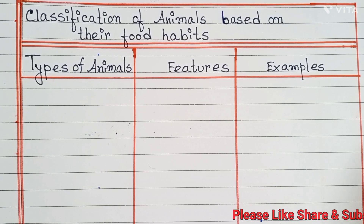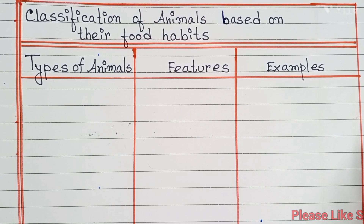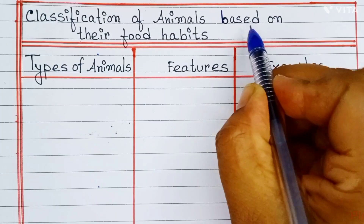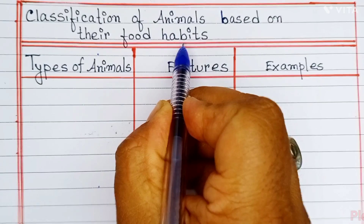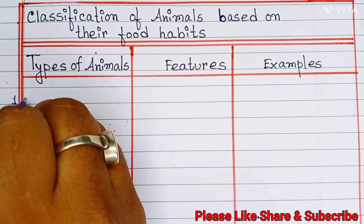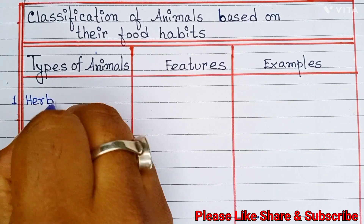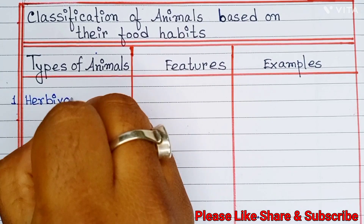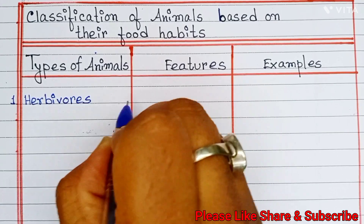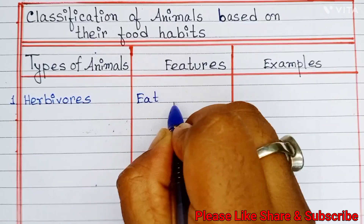Hello friends, welcome back to my channel Asika Learning. Today in this video we are going to learn about the classification of animals based on their food habits. Let's start. Number one: herbivores animals. Their feature is they eat plants.